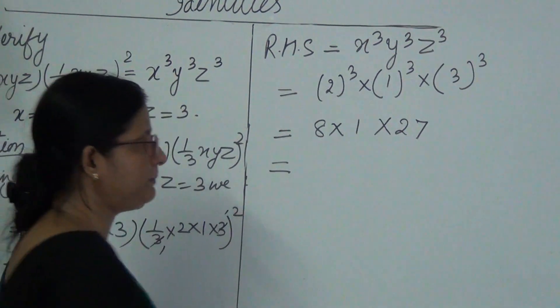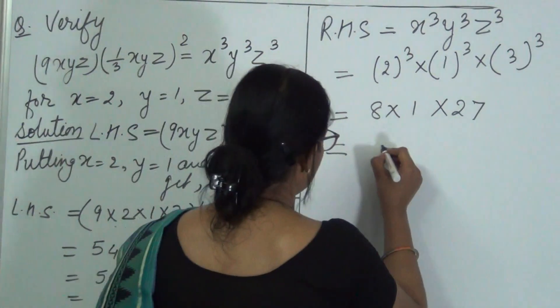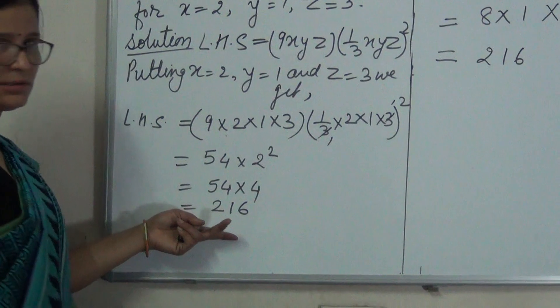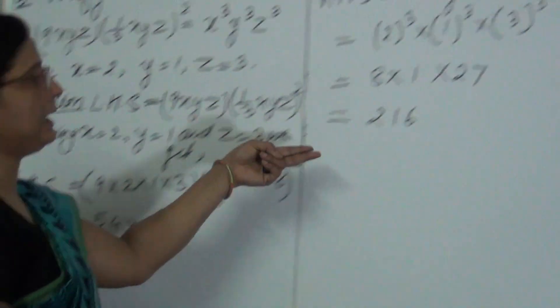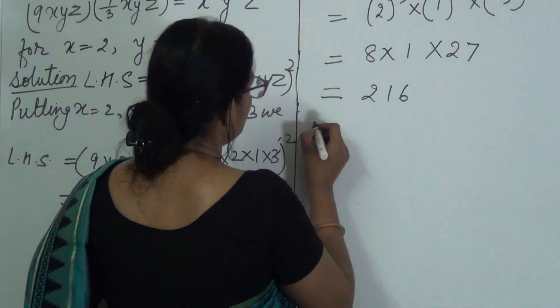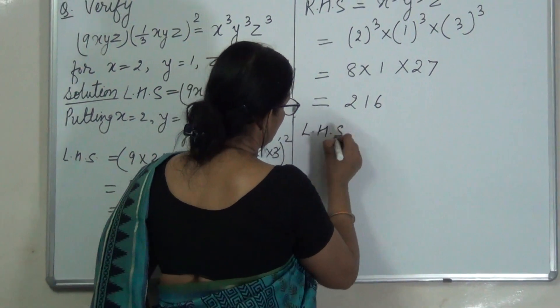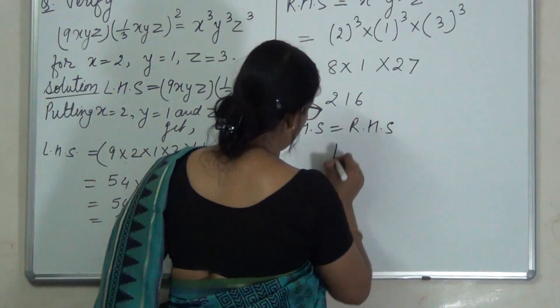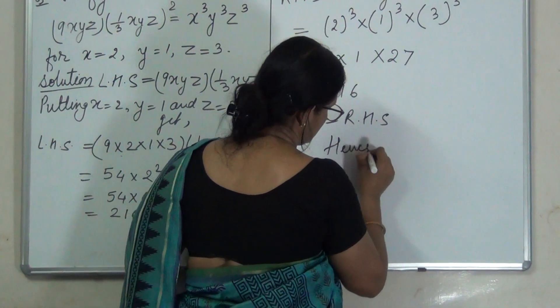Now a multiplication of 8 and 27 we get 216. Now we see that LHS is also 216, RHS is also 216. So we can say that LHS is equal to RHS. Hence verified.